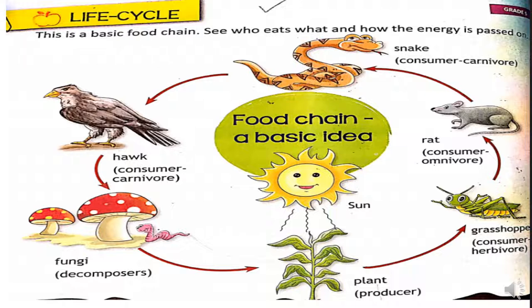In this food chain diagram, the food chain begins with a plant. The plant is eaten by a grasshopper — so grasshopper is a consumer. When the grasshopper eats a plant, it means he is a herbivore and a consumer. After that, the grasshopper is eaten by a rat. The rat is eating an animal, so the rat is an omnivore — he can eat green things as well as animals. So the rat is also a consumer.